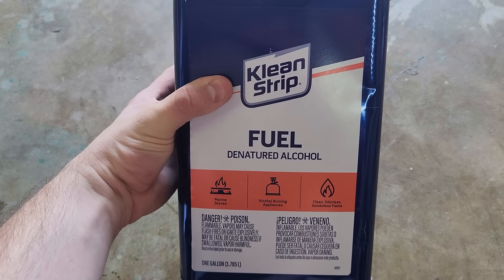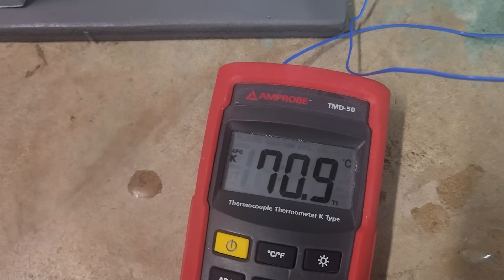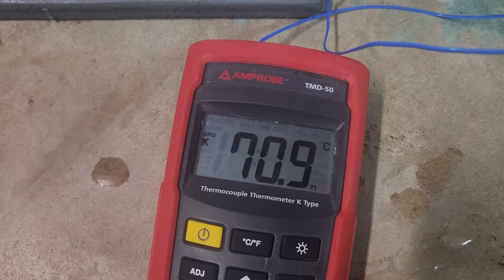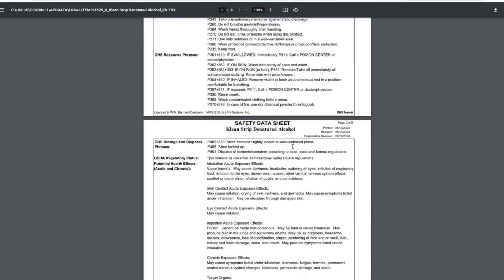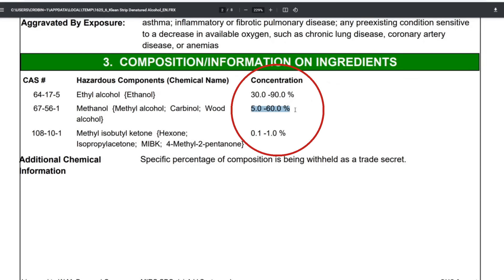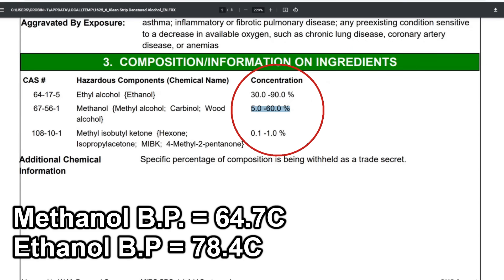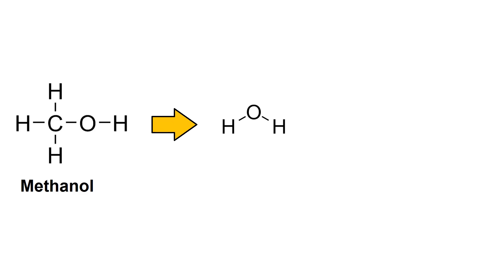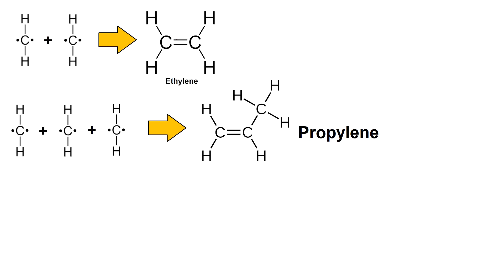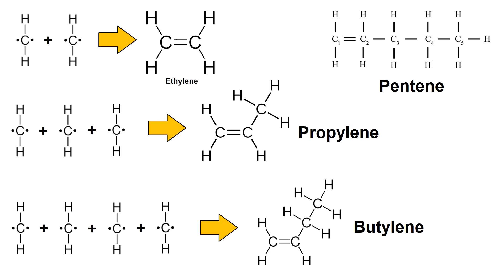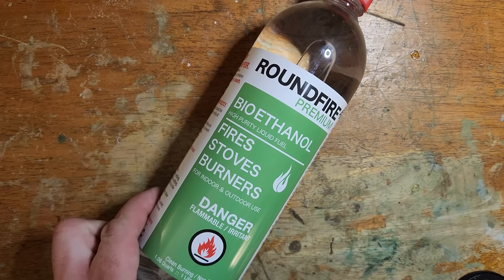At first I used denatured alcohol from the hardware store, but I noticed it was boiling at a suspiciously low temperature — 71 C instead of ethanol's 78.4 C. Looking up the MSDS, I found this brand was up to 60% methanol, which has a boiling point of 64.7 C, explaining the lower temperature when mixed with ethanol. Methanol does still create ethylene in this reactor, but the process is weirder — it breaks into CH2 and water. Those CH2 ions can combine to make ethylene but can also form larger chains like propylene, butylene, and pentene, which I don't want.